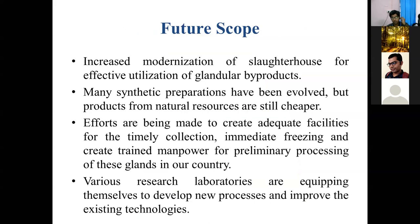Regarding the future scope: there is increasing modernization of slaughterhouses and effective utilization of abattoir byproducts. One concern is that many synthetic alternatives are coming to market, but products from natural resources are still cheaper, so we must focus on natural sources. Efforts must be made to create adequate facilities for timely collection, immediate freezing, and to create trained skilled manpower for primary processing of these glands in India. Various research laboratories must be equipped with instruments to develop new processes that improve existing technology and increase yields of hormones and enzymes from these glands.